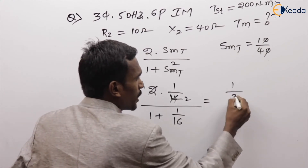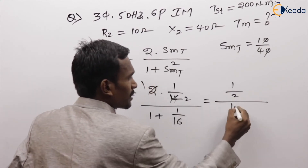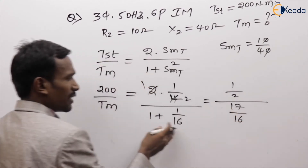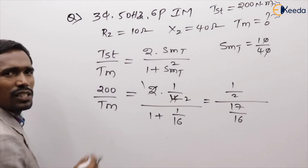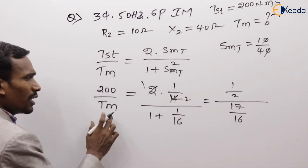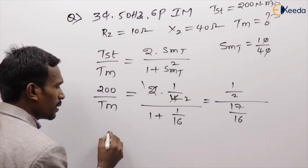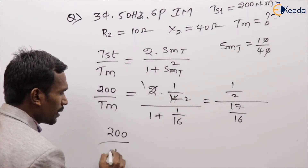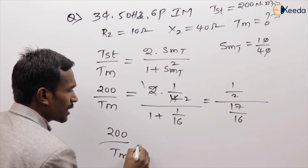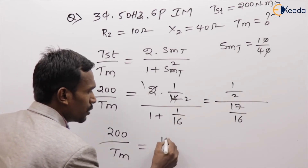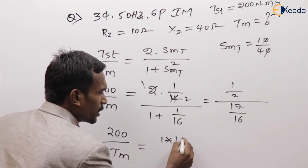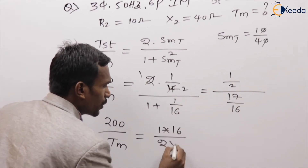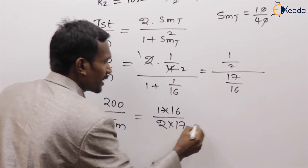That gives: (1/2) / (17/16) = 16/(2 × 17) = 8/17. So 200 / T_max = 8/17. Therefore T_max = 200 × 17/8.